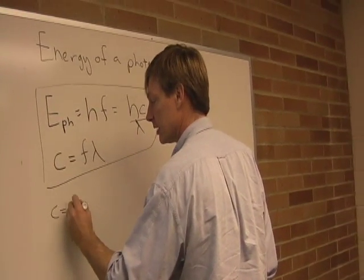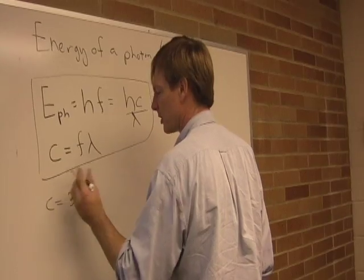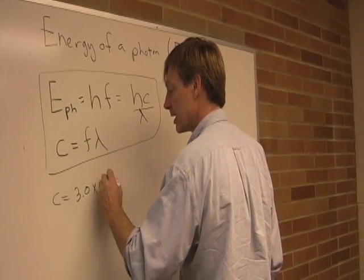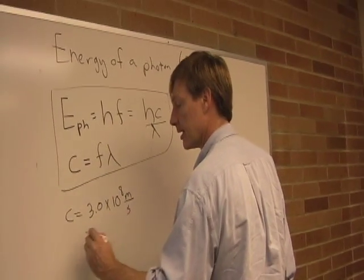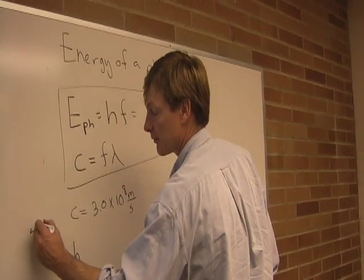I'll write that down. c is 3.0 times 2.99 something, times 10 to the 8th meters per second. And h, that's the speed of light in a vacuum.